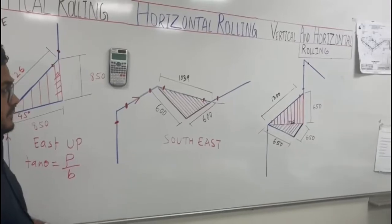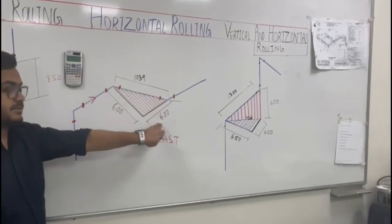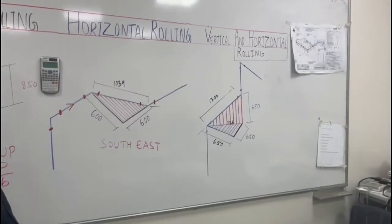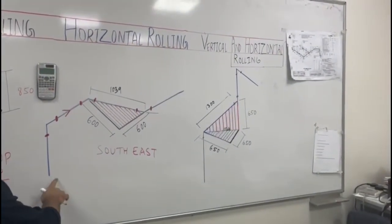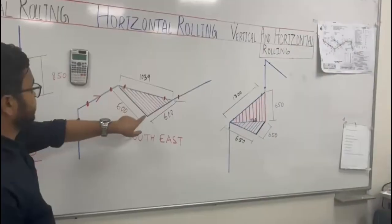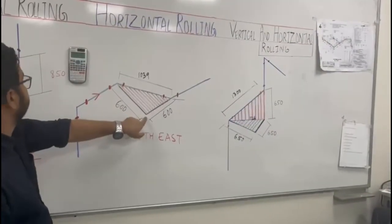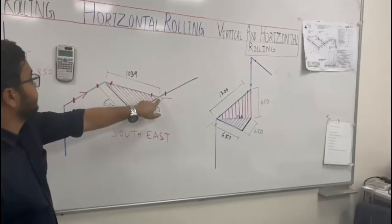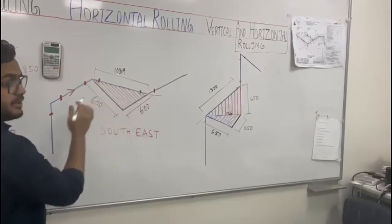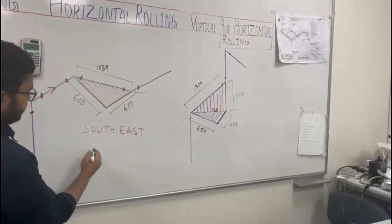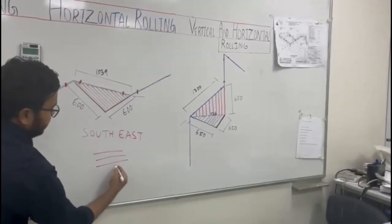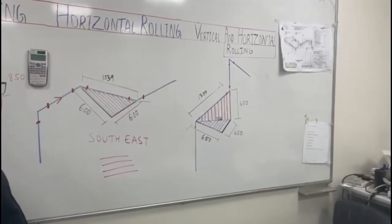Now I will make you understand horizontal rolling. Here it is going up, then south, then it is going to east. This is horizontal rolling. The hash line is like this — that's why it is for horizontal rolling.